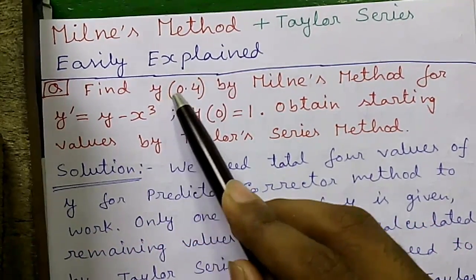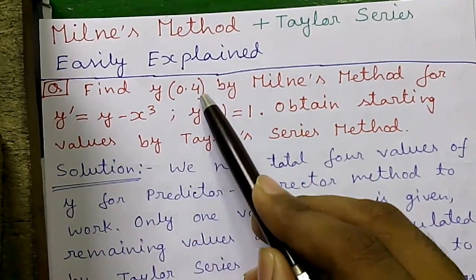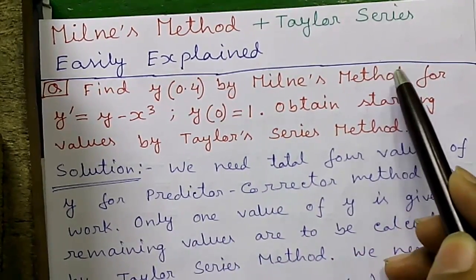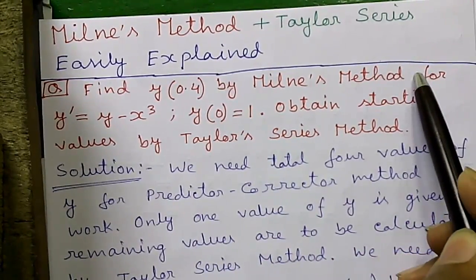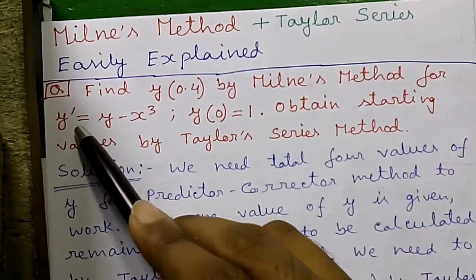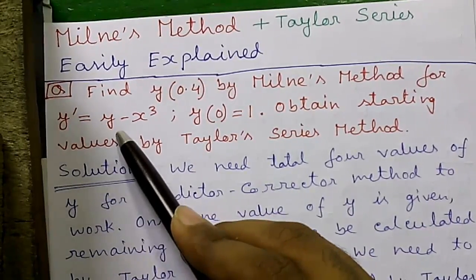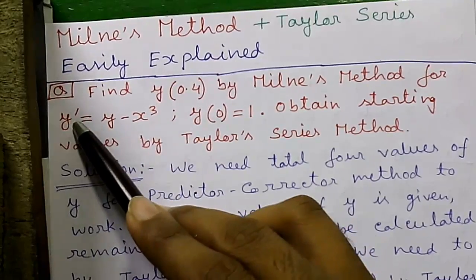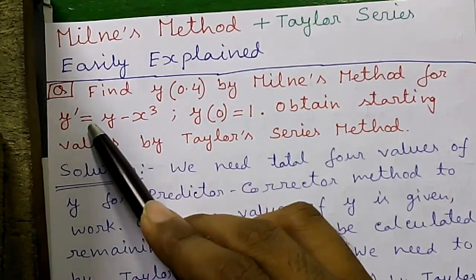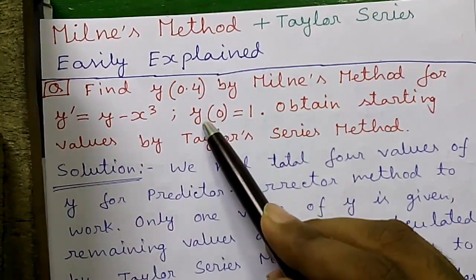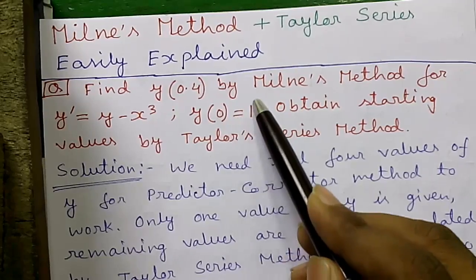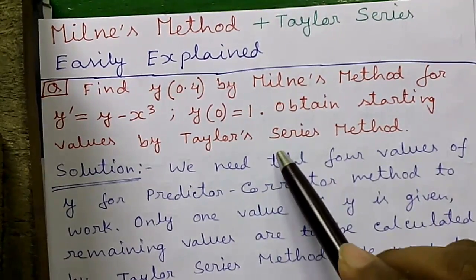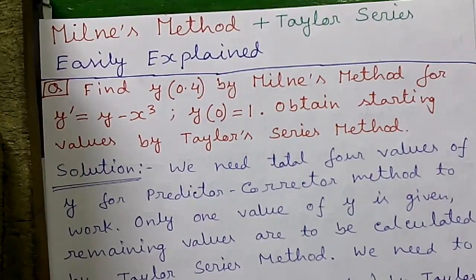Our question is: find y(0.4) by Milne's predictor-corrector method for y' = y - x³, where y' means dy/dx and y(0) = 1 is given. Obtain the starting values by Taylor series method.